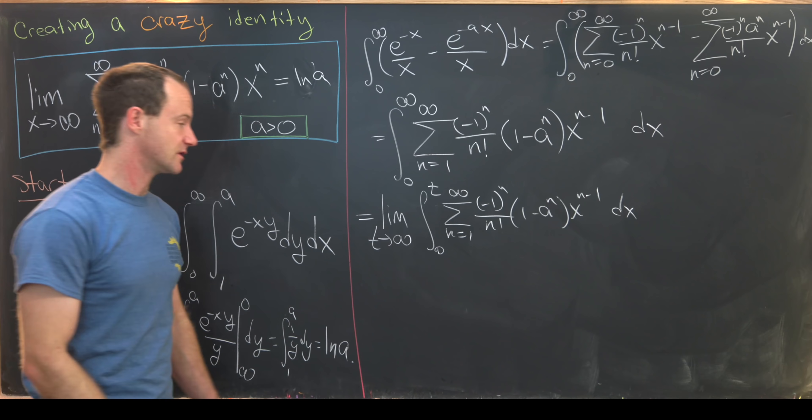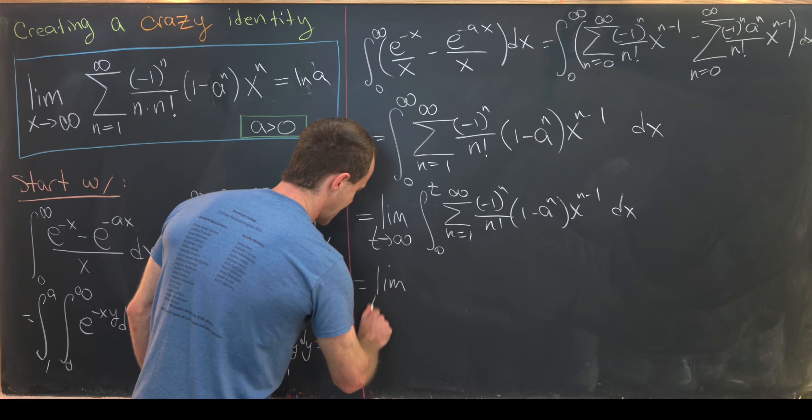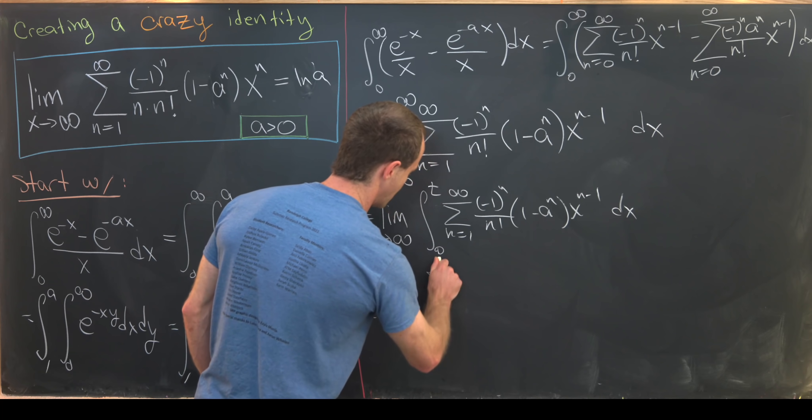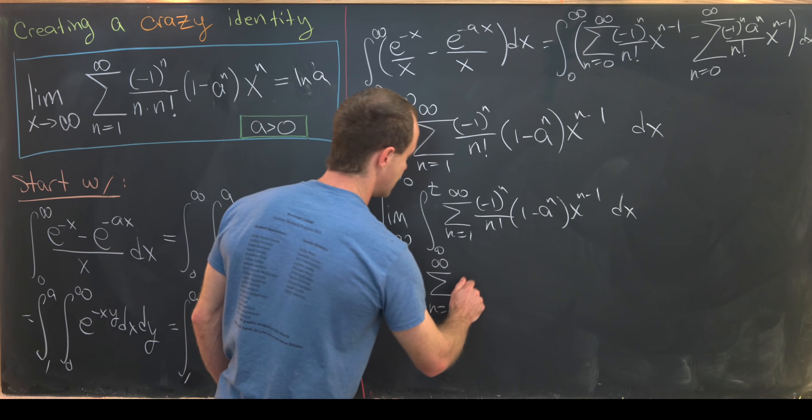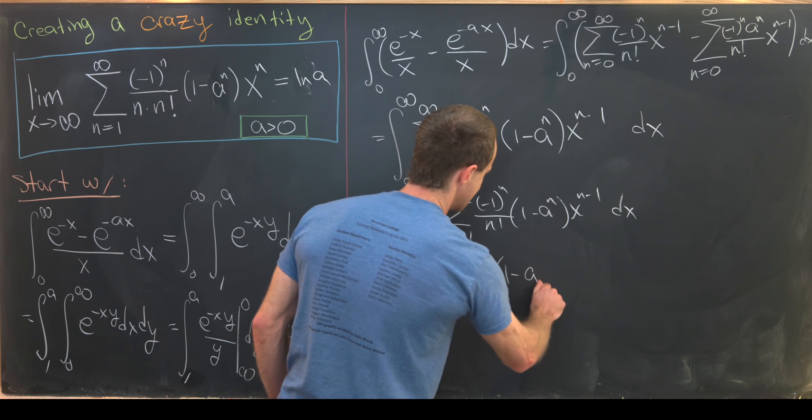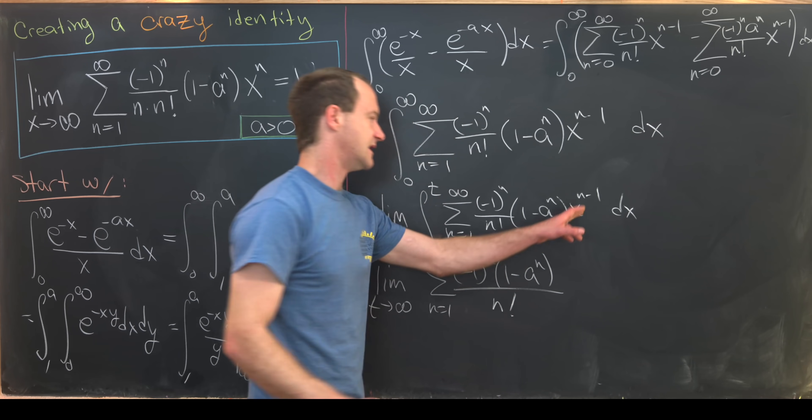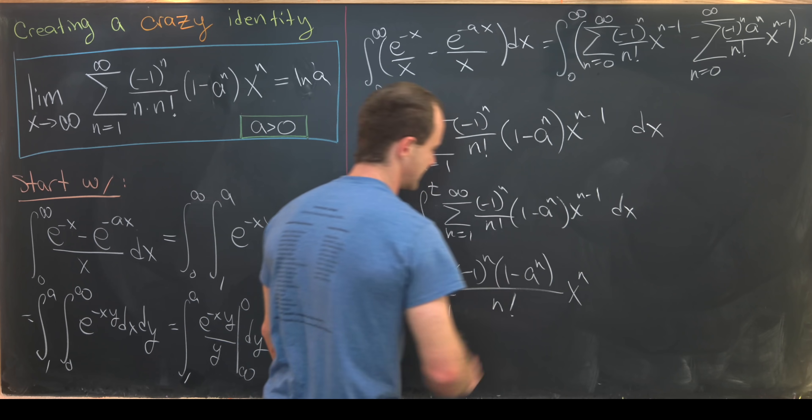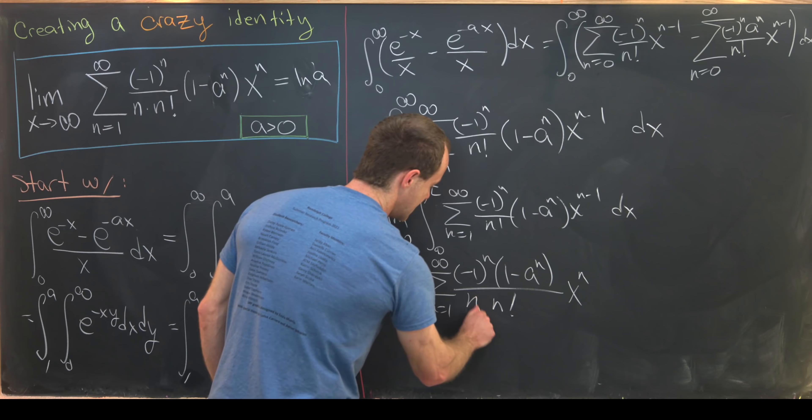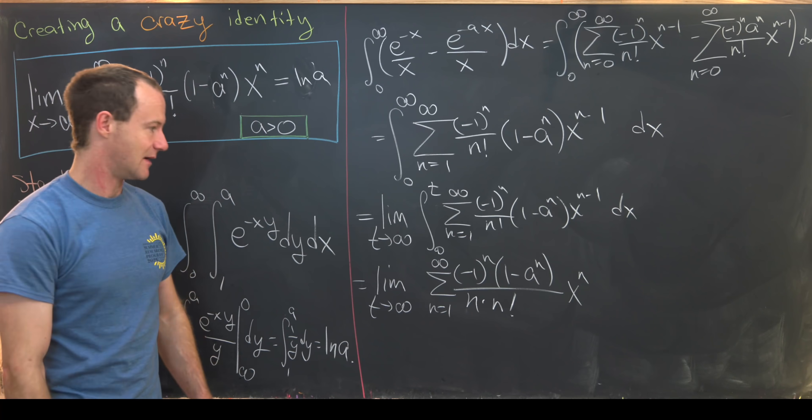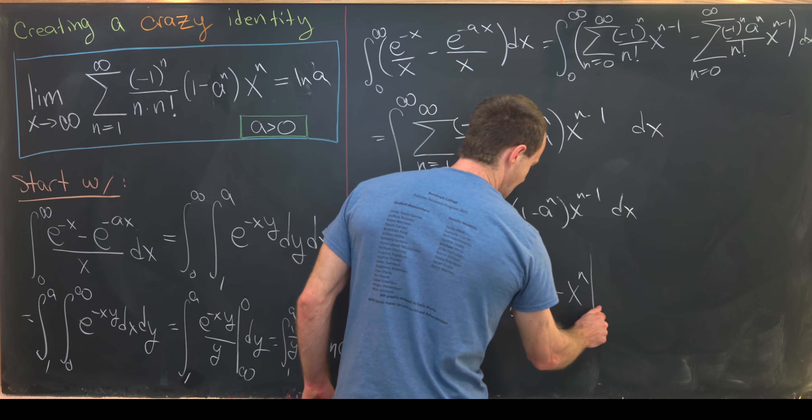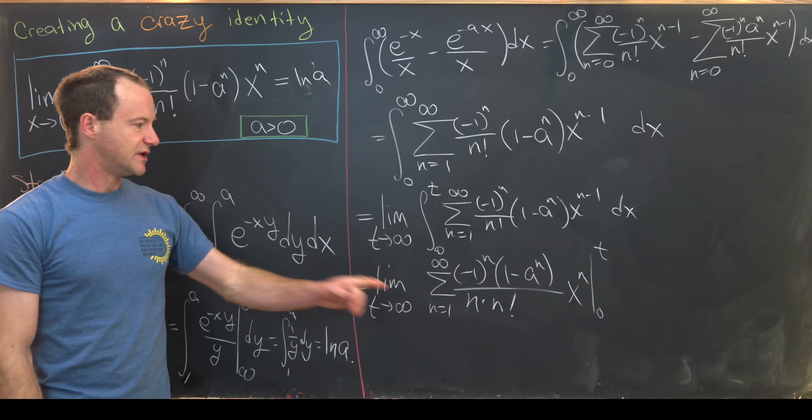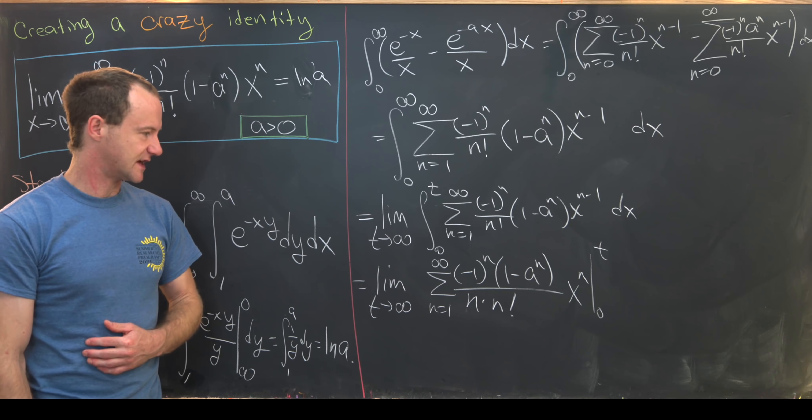Now we can start taking an antiderivative so that's going to give us this limit as t goes to infinity of my sum as n goes from 1 up to infinity of minus 1 to the n 1 minus a to the n over n factorial. Now I need to raise my power of x by 1 and divide by that new exponent. That'll mean I'm going from x to n minus 1 to x to the n dividing by the new exponent means I put an n in the denominator there. Now I need to evaluate that at 0 and t. Evaluating that at 0 will just give us 0 so that's nice.